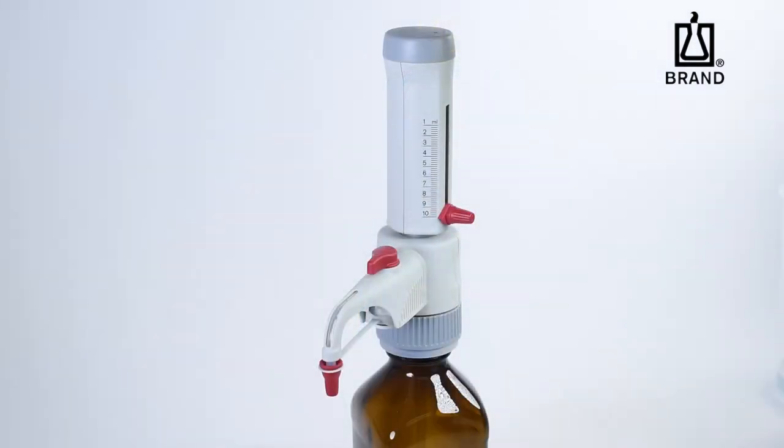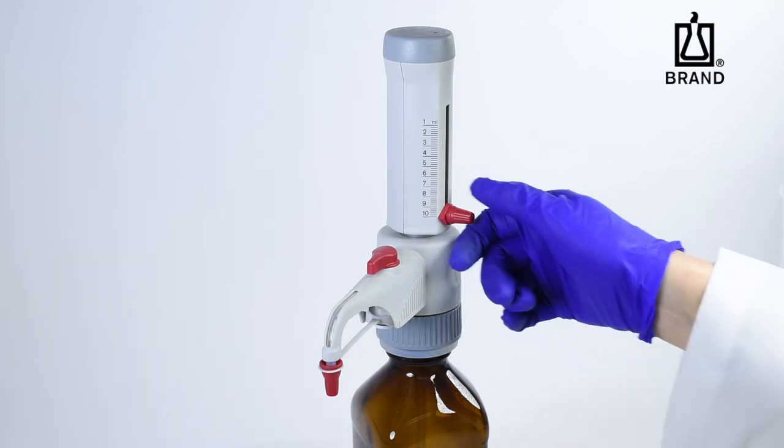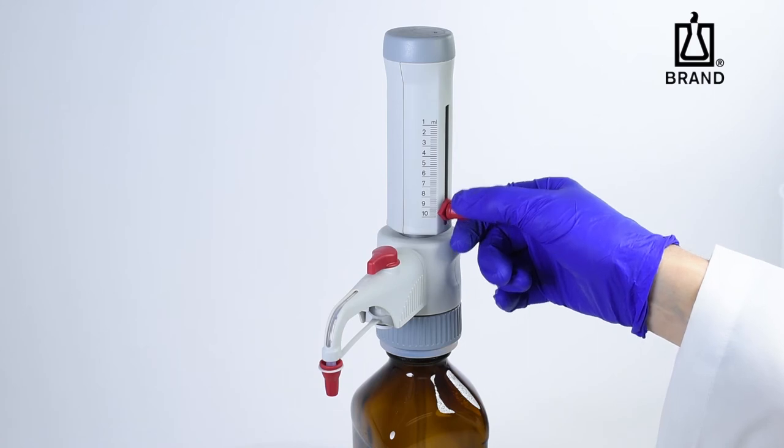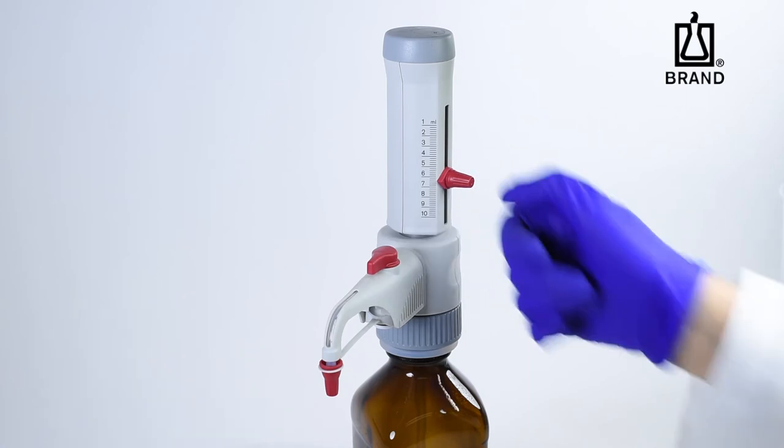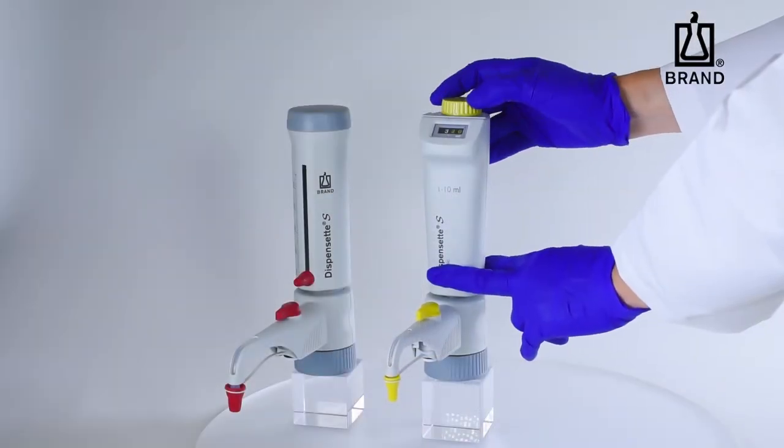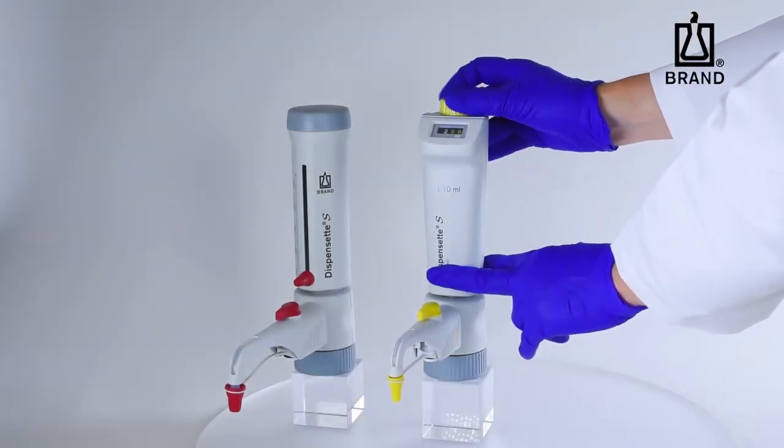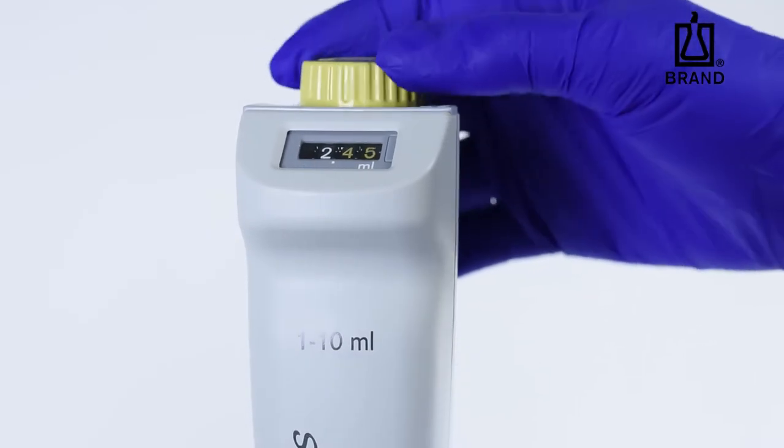To adjust the volume setting for the analog adjustable model, loosen the volume selector thumb screw, slide the pointer to the desired volume and re-tighten the thumb screw. For digital models, rotate the volume setting wheel until the desired volume is indicated in the display window.